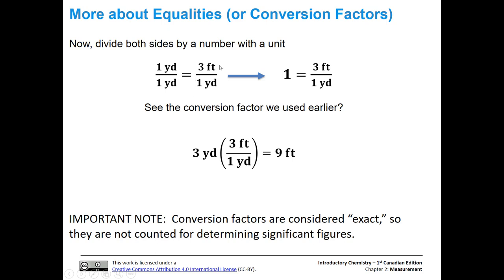What if you divide both sides by a number with a unit? We have one yard is equal to three feet. Let's divide both sides by one yard. One yard divided by one yard is equal to one. Three feet divided by one yard — that is our conversion factor that we just used. So three yards divided by one yard gets rid of the yards, multiplied by three feet gives us nine feet. One really important note: conversion factors are considered exact, so they are not counted when determining significant figures.